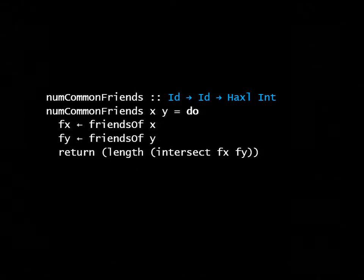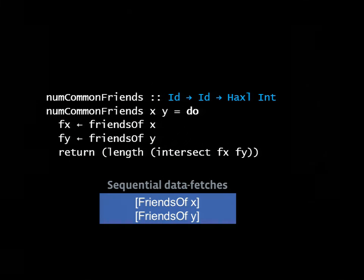Here's another way to write the same function. I can write it using Haskell's do notation. In the do notation, I just write a sequence of statements. I've got two statements here, each computing friends of on X and Y, and then finally I take the intersection of those two lists and the length as before. This version is somewhat clearer than the version on the previous slide. I didn't have to use any strange operators. I'm just writing a sequence of statements. It's slightly less brittle because I could switch the order of these statements and it would do the same thing. But what happens if I try and run it is that I get sequential data fetches instead of parallel ones.